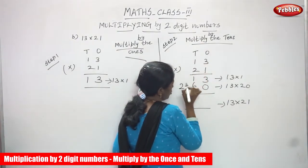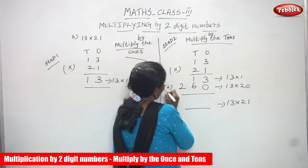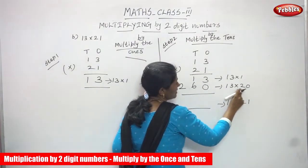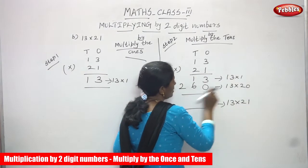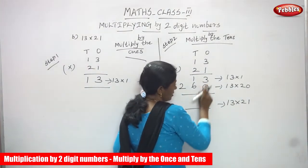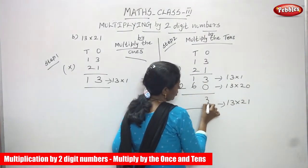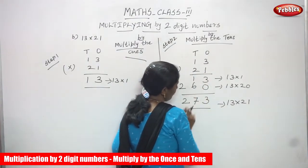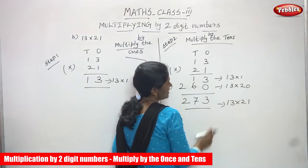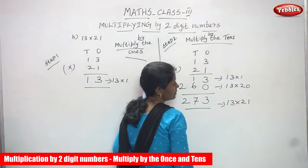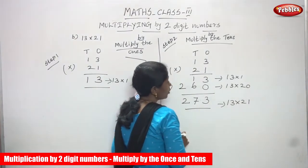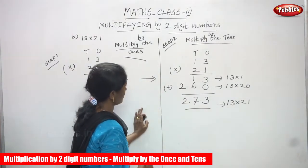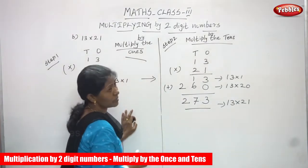Now we are going to add: 13 into 1 gives 13, and 13 into 2 tens (that is 20) gives 260. So now add: 3 plus 0 is 3, 1 plus 6 is 7, and bring down 2. The answer is 273. So 13 into 21, the answer is 273. This is the right answer.